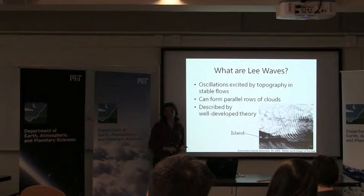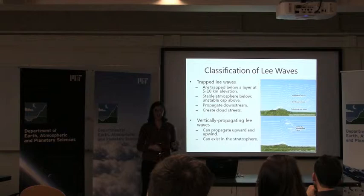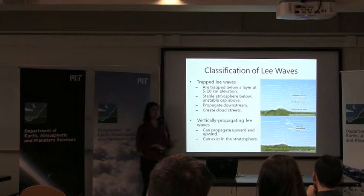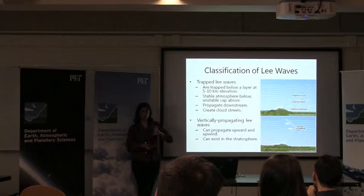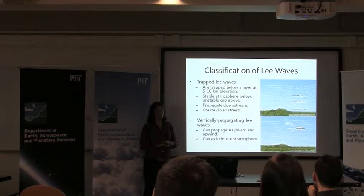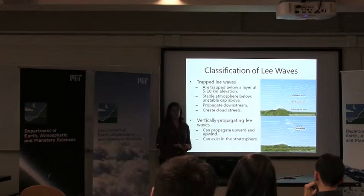In general, there are two types of Lee waves. There are trapped Lee waves and vertically propagating Lee waves. For trapped Lee waves, the atmosphere is stable up to a certain point, above which it's unstable and oscillations cannot propagate — so they're generally not seen in the stratosphere. Vertically propagating Lee waves can move all the way up into the stratosphere — observed at 20 kilometers above the Sierra Nevada — and can actually propagate upwind of the mountain that forms them, unlike the downwind behavior of trapped Lee waves.